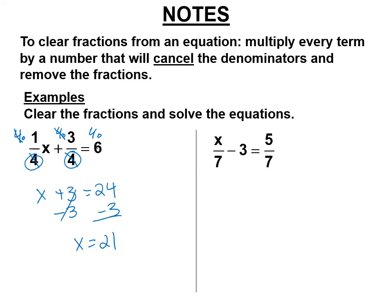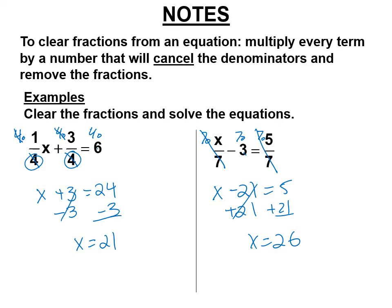We're going to clear those 7s, so multiply everything by 7 — even the term without a fraction gets multiplied by 7, both entire sides. The 7s cancel and you get x. Minus 7 times 3 is 21. Those cancel and you get 5. Add 21 to both sides and x equals 26. You don't have to do it that way, but it's way easier. Leaving those fractions there causes all sorts of pain when you don't have to deal with it. Clear the fractions and get an equation that's way easier to solve.